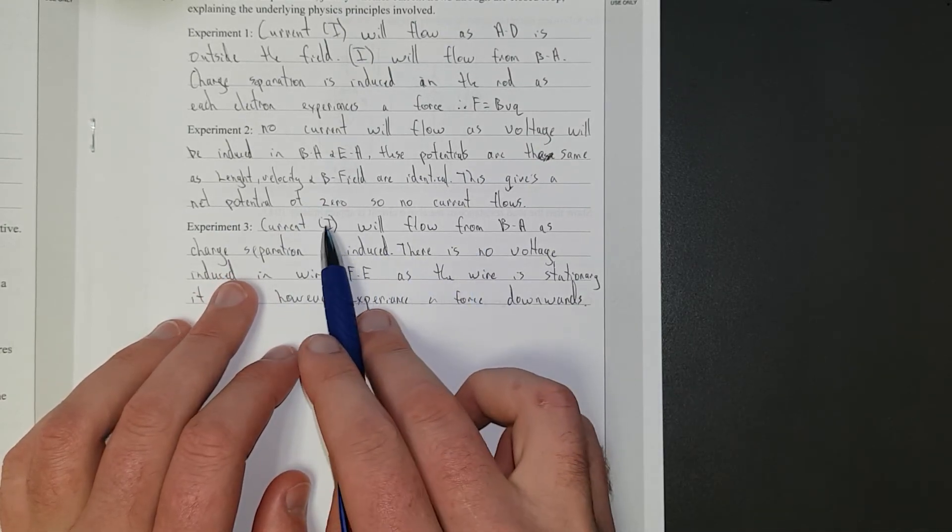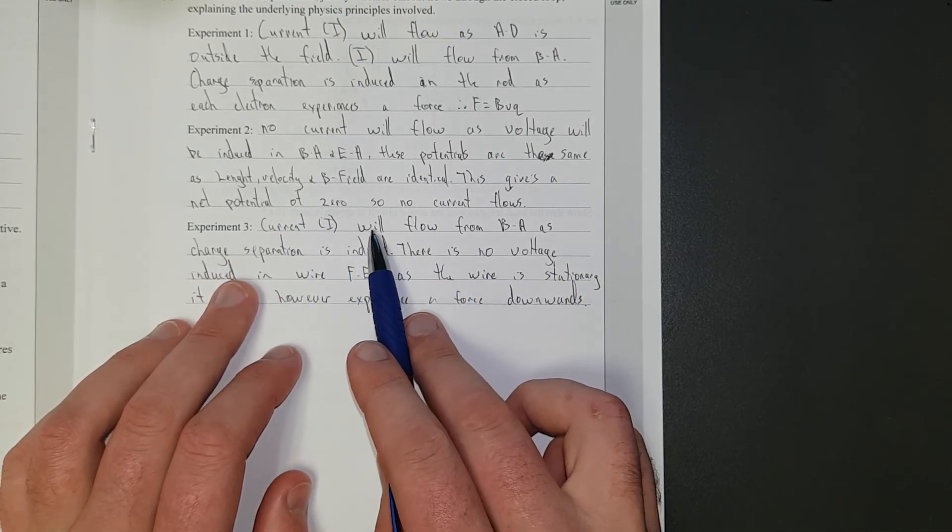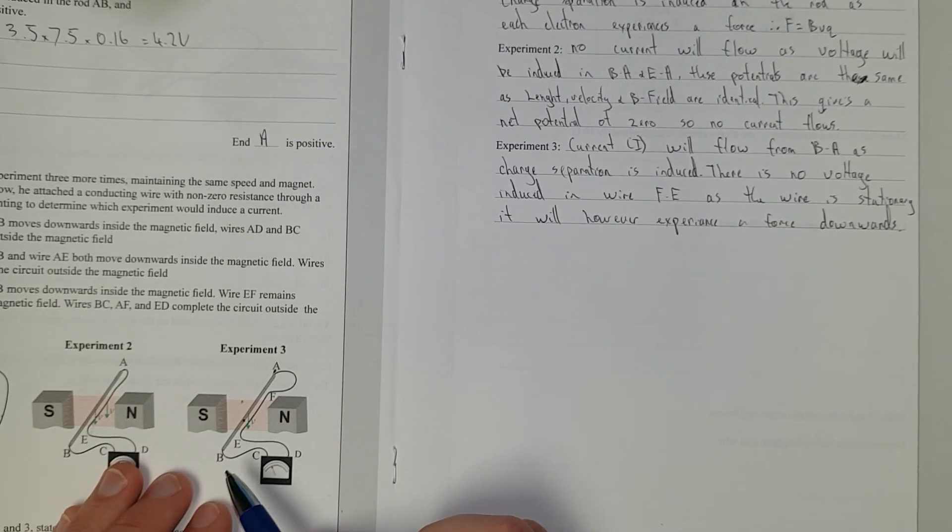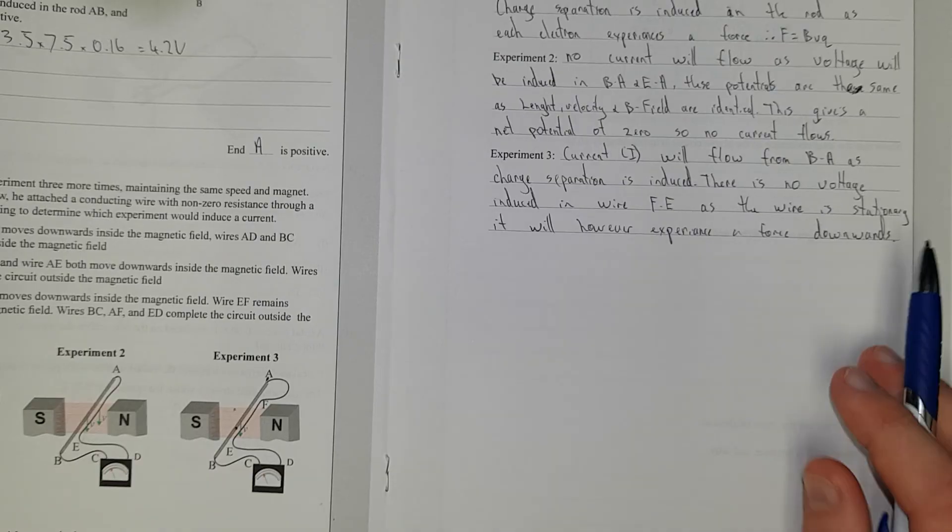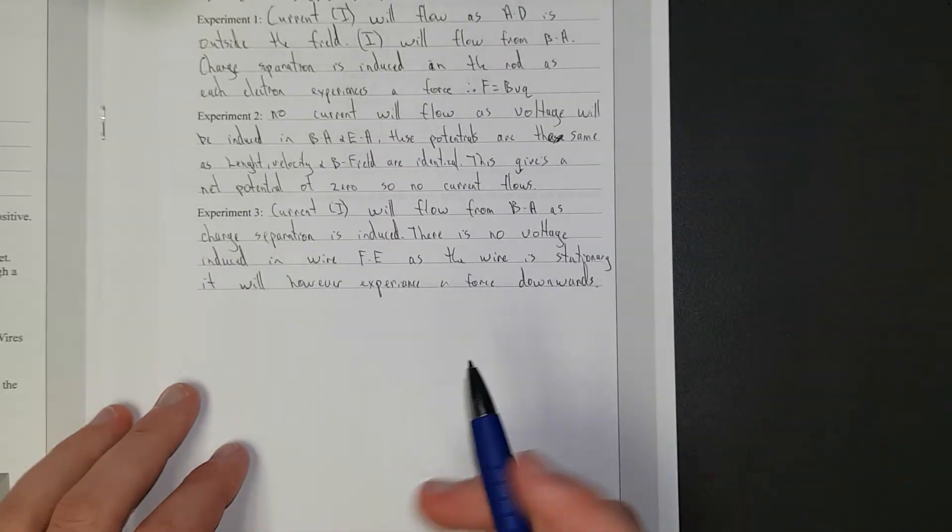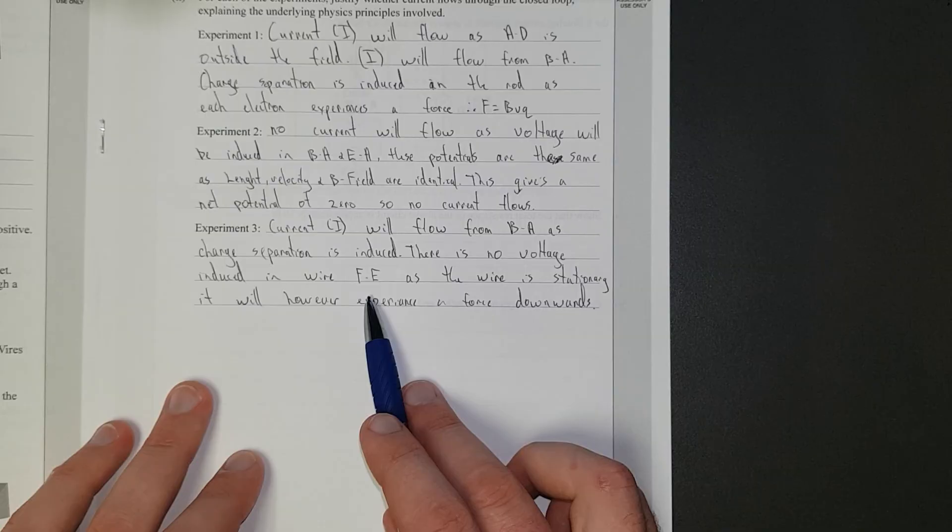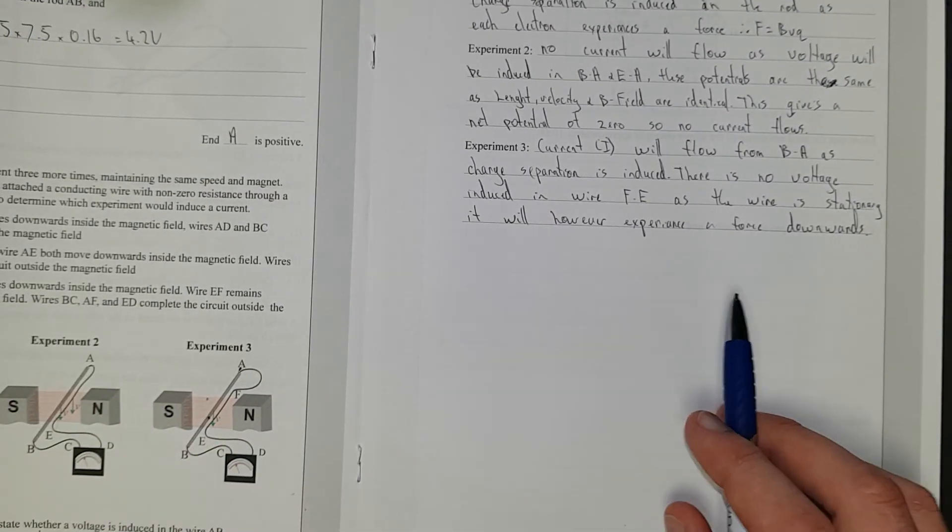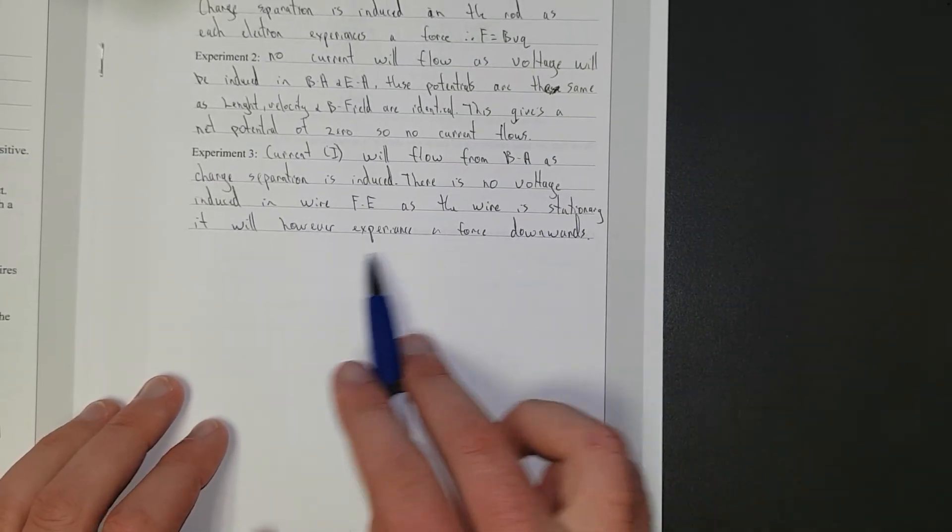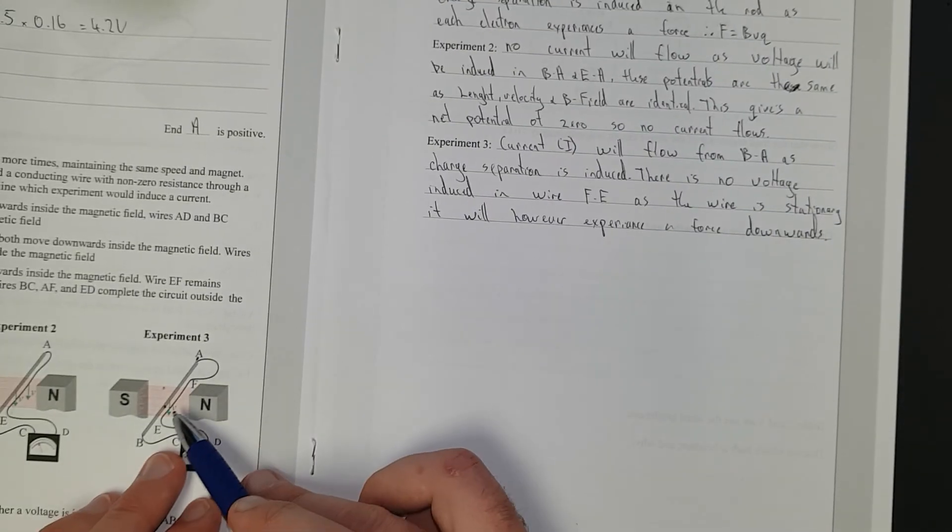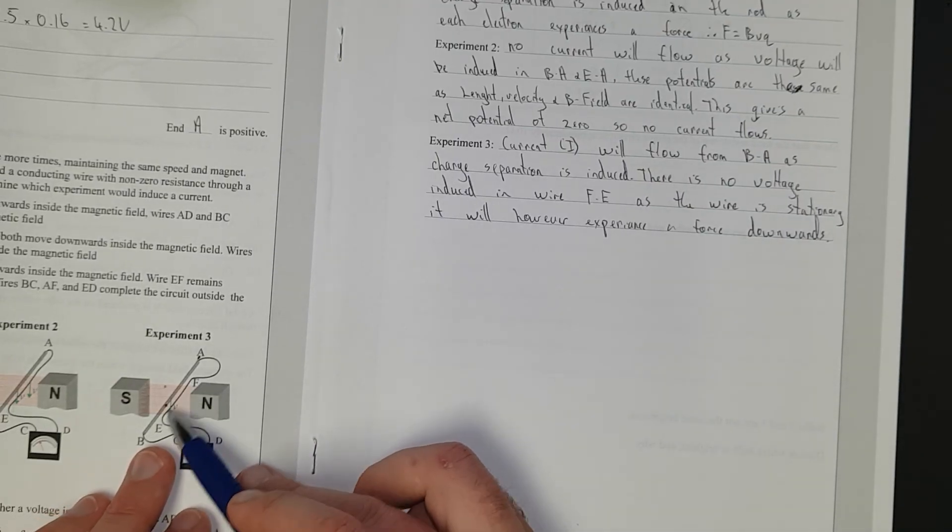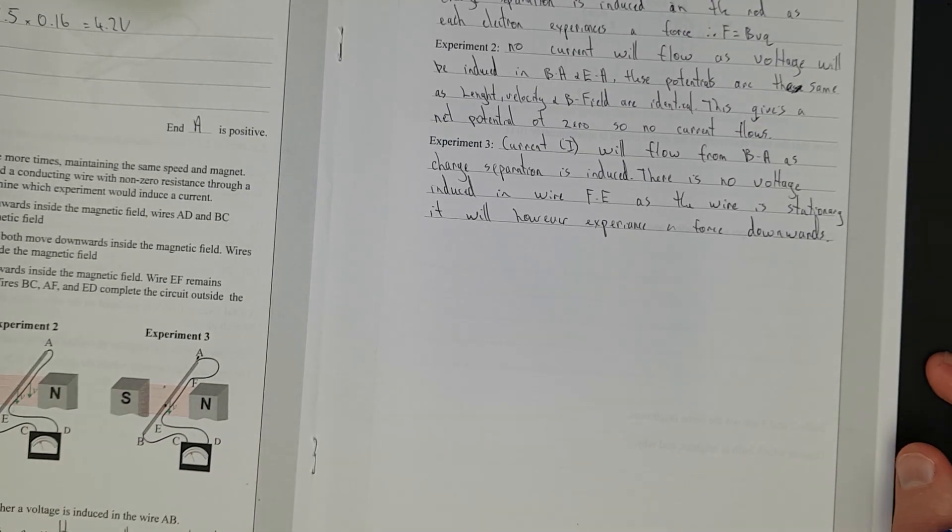Current will flow from B to A. So here is the rod B to A. As charge separation is induced, there is no voltage induced in the wire FE, which is this one here, because it's not moving, as the wire is stationary. It will, however, experience a force, the force downwards, because current's gonna start flowing. Current's gonna start flowing on that wire, and now it'll experience a force. But that's like a side bit that, it wasn't on the answer schedule, I thought I'd just chuck in there, because it's kinda neat.